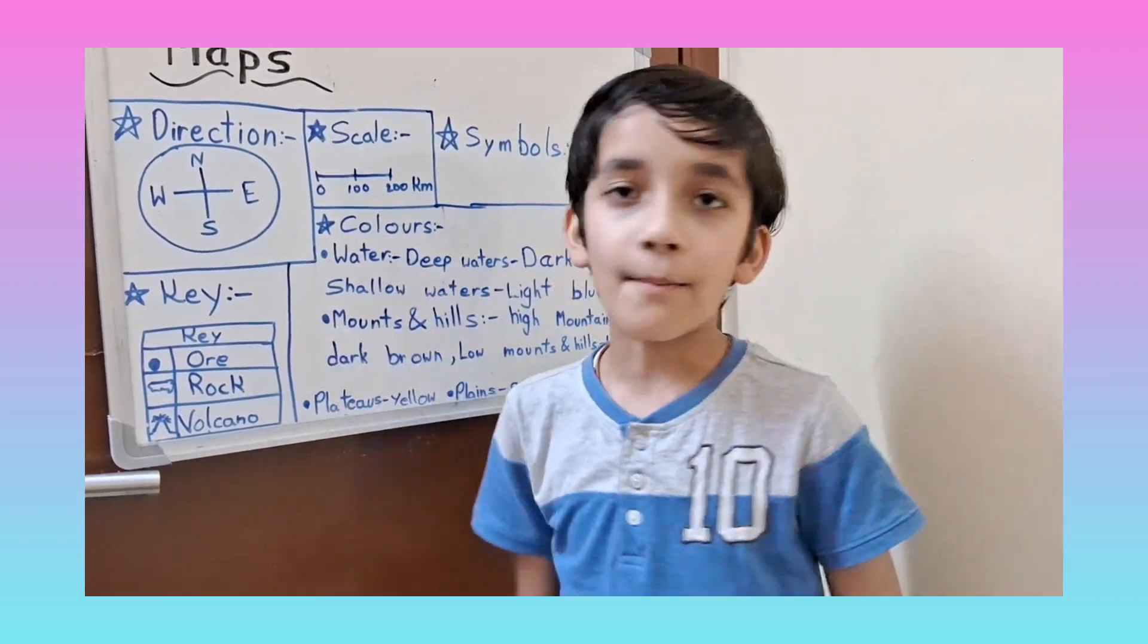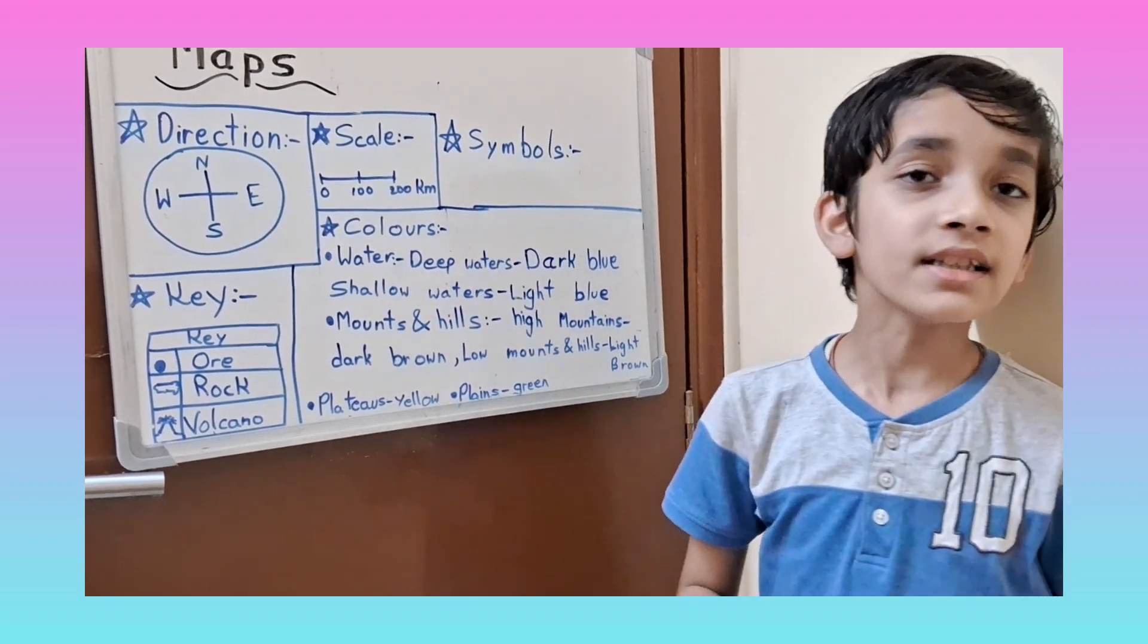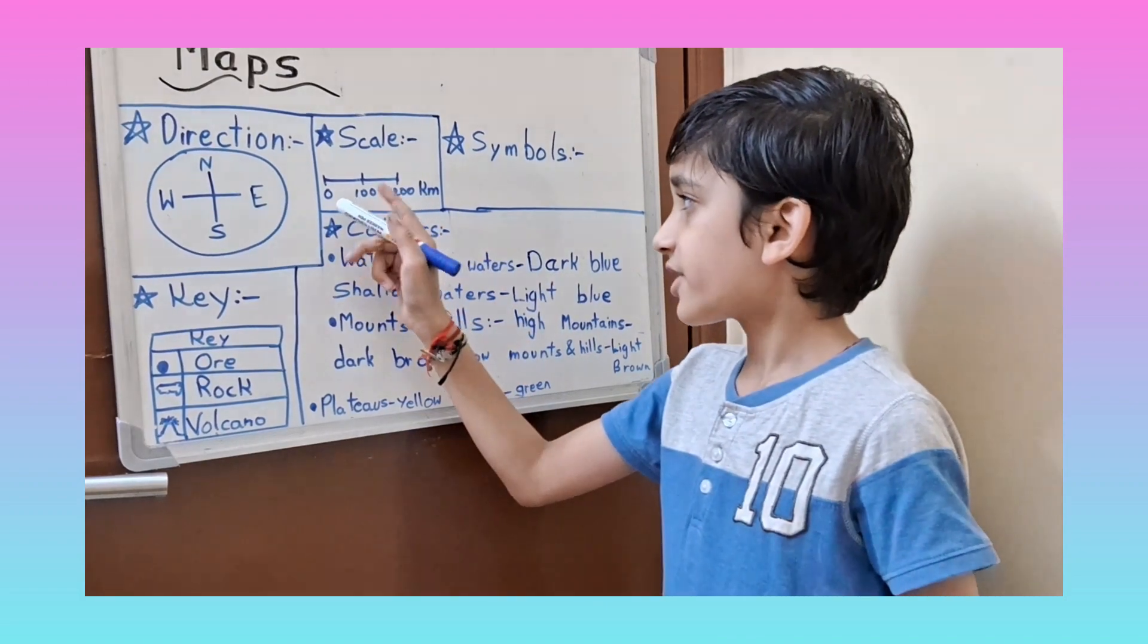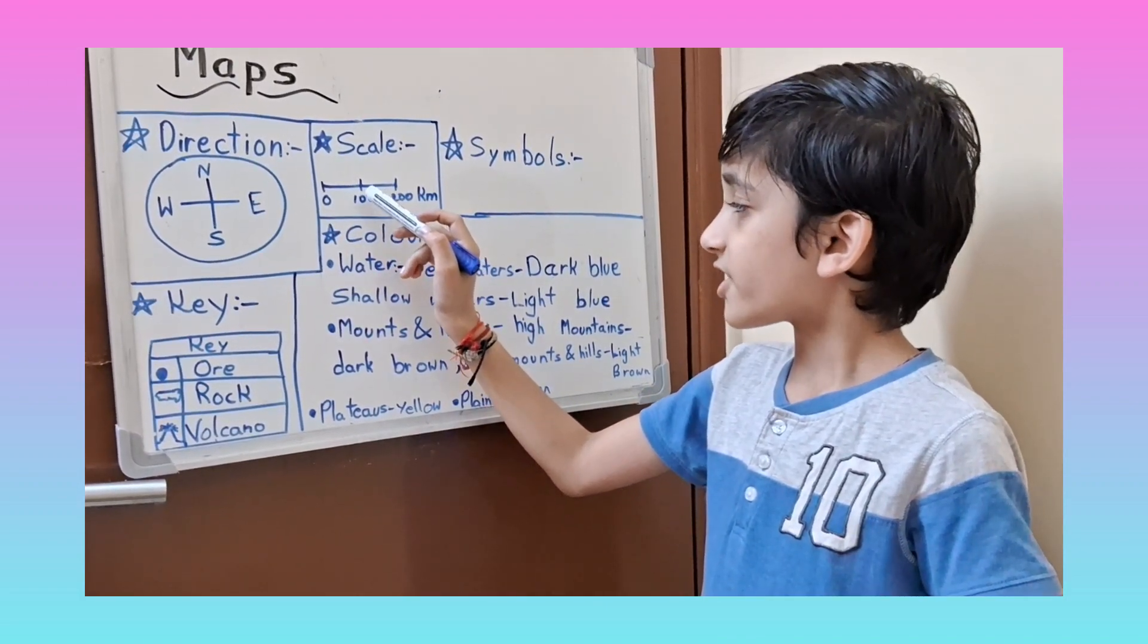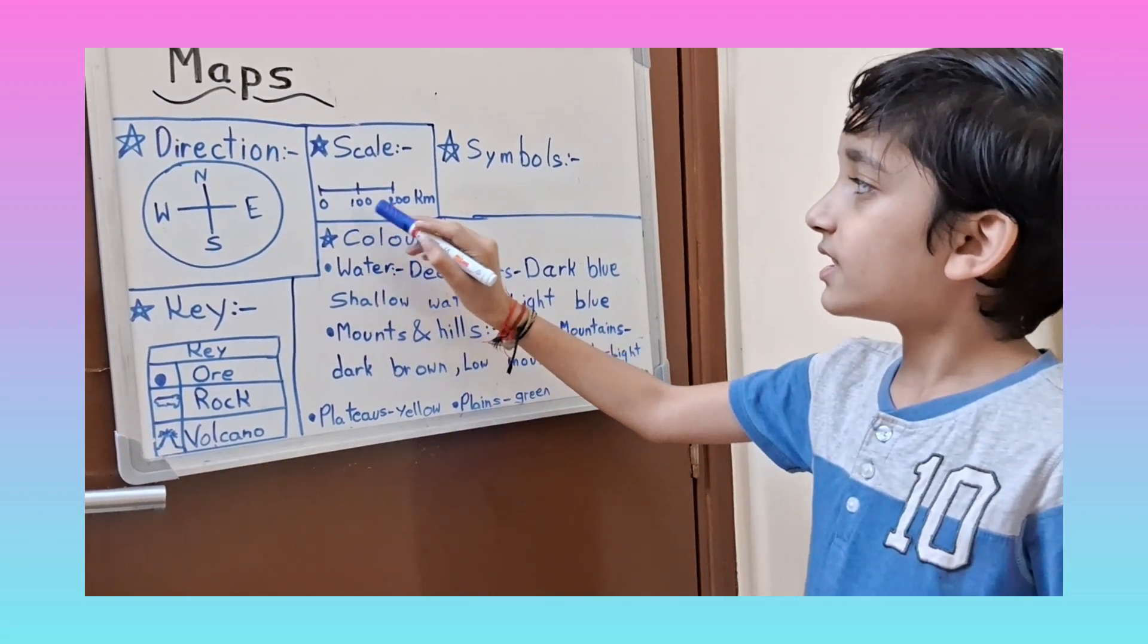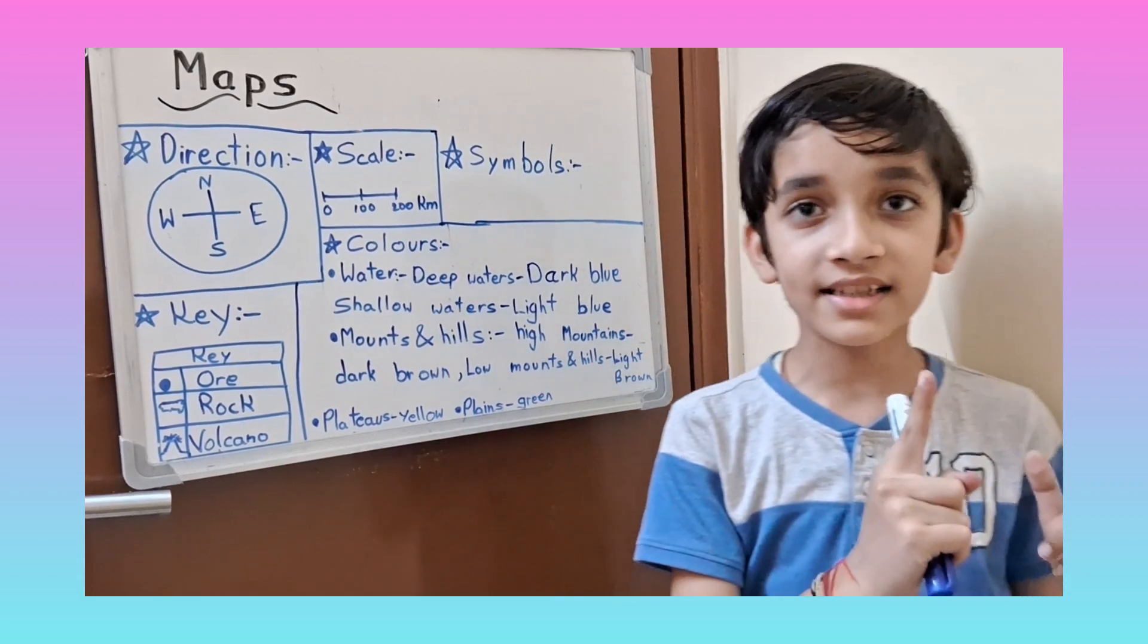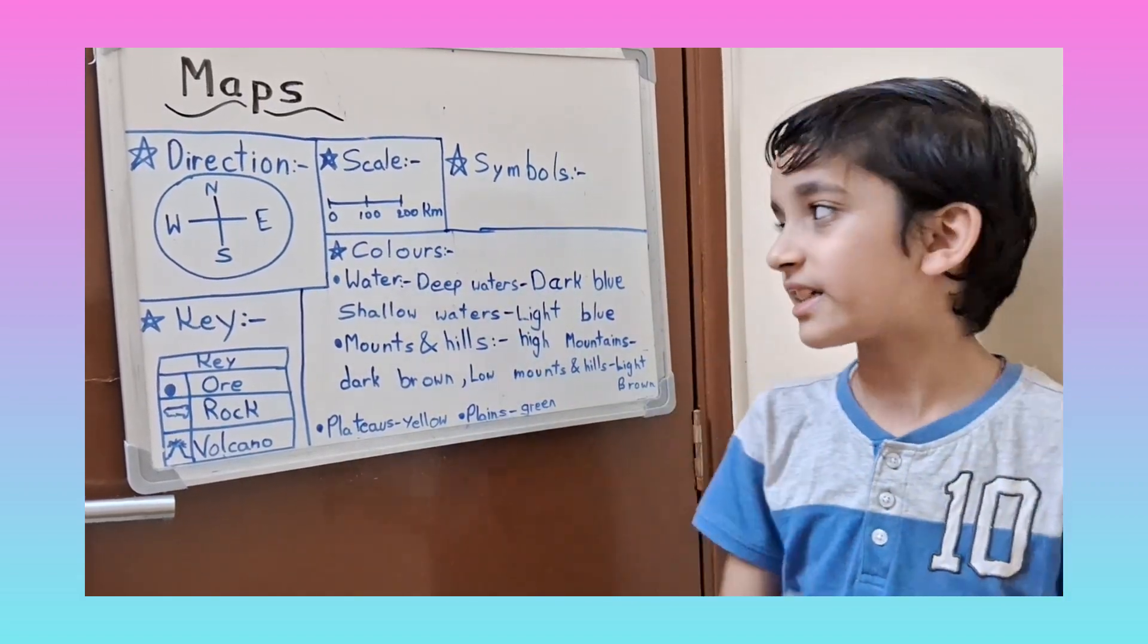Like I have an example that one centimeter is equal to one hundred kilometers. In this we draw one dash, then one centimeter long line, then one more dash and one centimeter long line, and one more dash. So in here it shows one centimeter equals one hundred kilometers, so one hundred kilometers is shown in one centimeter, and two hundred kilometers is shown in two centimeters.